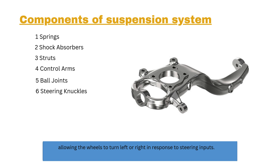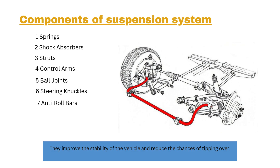Number six: steering knuckles. Steering knuckles connect the suspension components to the wheels, allowing the wheels to turn left or right in response to steering inputs. Number seven: anti-roll bars. These bars are designed to reduce body roll during cornering by linking opposite wheels together, improving the stability of the vehicle and reducing the chances of tipping over.